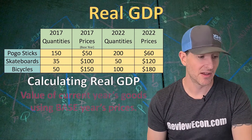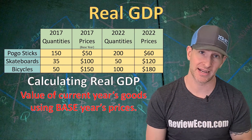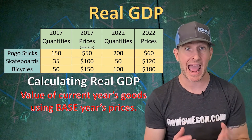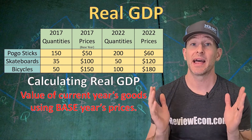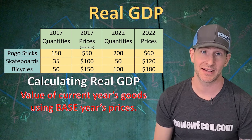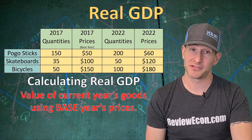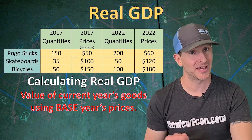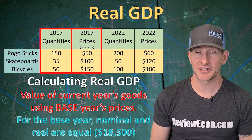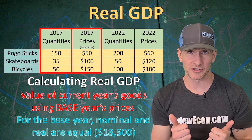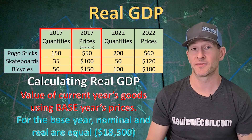Next, we're going to calculate real GDP. When it comes to real GDP, we use the current year's quantities times the base year's prices. In this case, we're using 2017 as our base year — that's the year for comparison. Keeping all prices the same means all dollars are in 2017 dollars. For 2017 real GDP, we use 2017 quantities and 2017 prices, so the nominal GDP and the real GDP are both $18,500. In fact, nominal and real will always be the same for the base year.